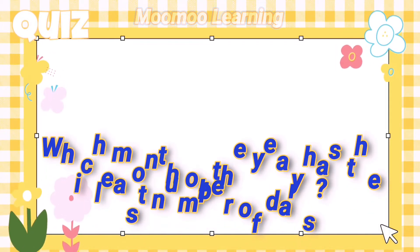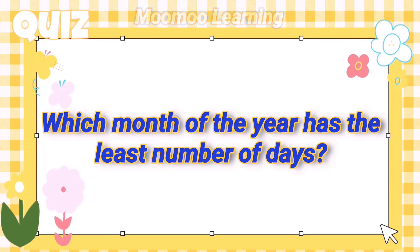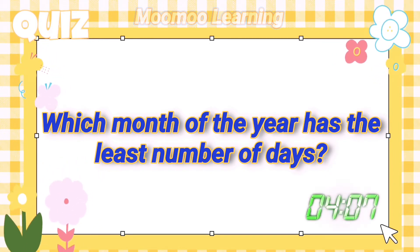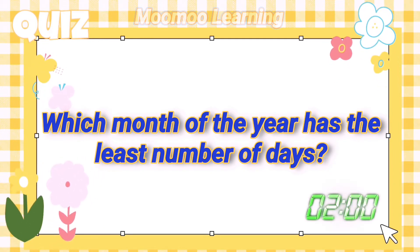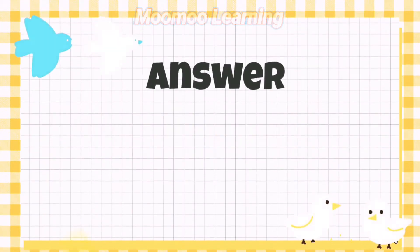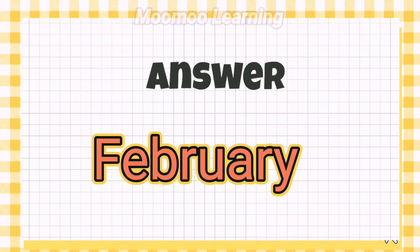Which month of the year has the least number of days? Answer: February.